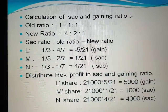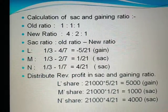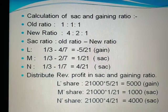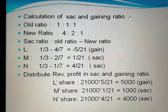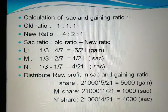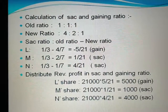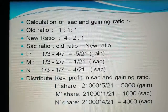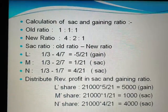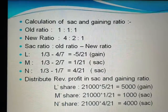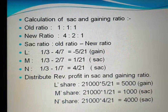Sacrifice is always equal to gain — M and N are sacrificing and their total equals L's gain, so L is the gaining partner. Now, distribute the revaluation profit of 21,000 in the sacrifice and gaining ratio of 5/21, 1/21, and 4/21. The amounts are: L gains 5,000, M sacrifices 1,000, and N sacrifices 4,000.